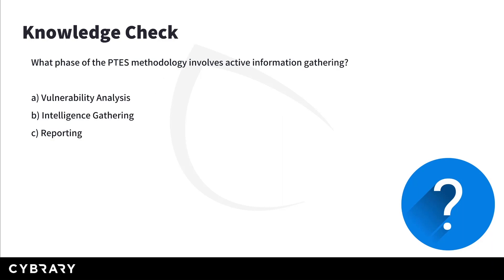Here's another one. What phase of the PTES methodology involves active information gathering? B. Intelligence Gathering is all about collecting information from external sources passively — and that's not the right answer. C. Reporting deals with documenting the entire pen test — also not the right answer. Which leads to A. Vulnerability Analysis, which involves discovering and validating vulnerabilities, thus active engagement with the target. So A is the right answer.